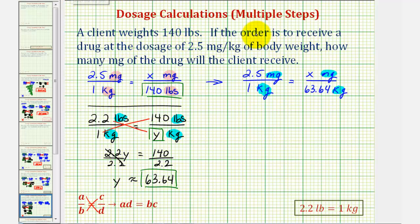So we have 1 times x must equal 2.5 times 63.64. Well, 1 times x, of course, is just x, equals 2.5 times 63.64.